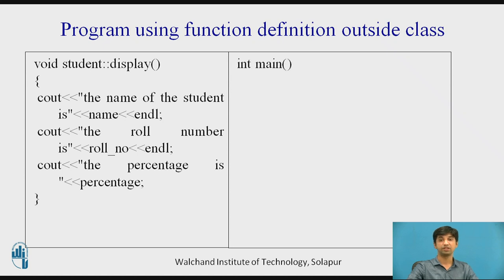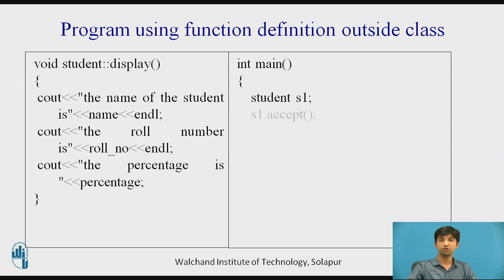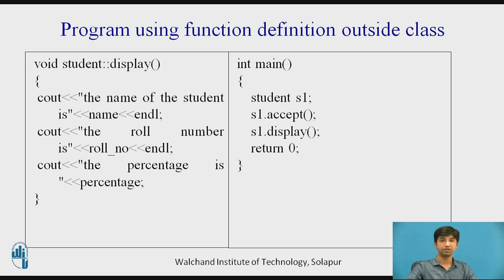Then I use the main function. In the main function, I create the object. The class name is student, so I say 'student s1' — s1 is the object created, which is the instance of the class. Through the object, I call the accept function: 's1.accept()' will accept the data from the user. Then 's1.display()' displays the data on the screen. Then return 0 — finally the data is displayed on the screen.